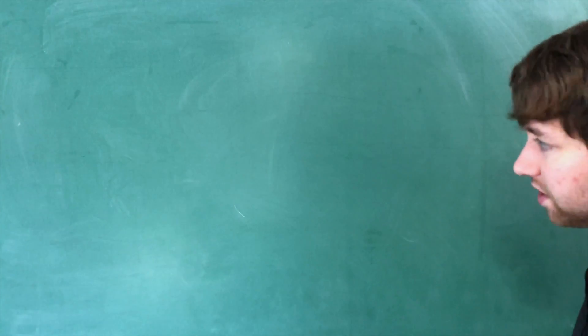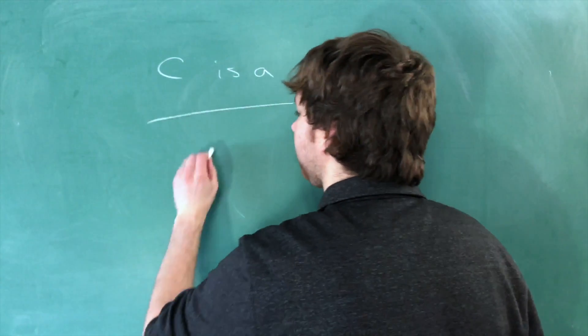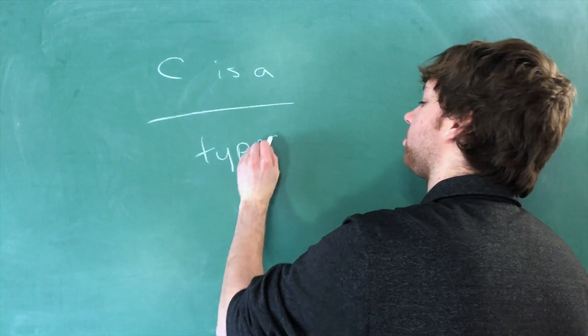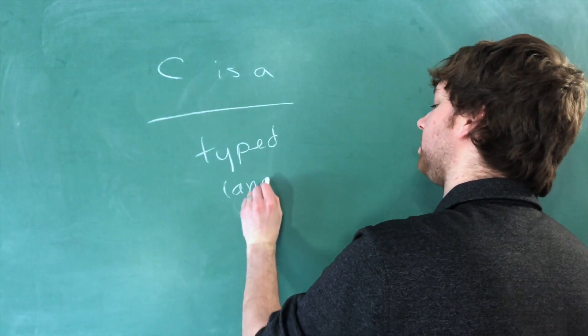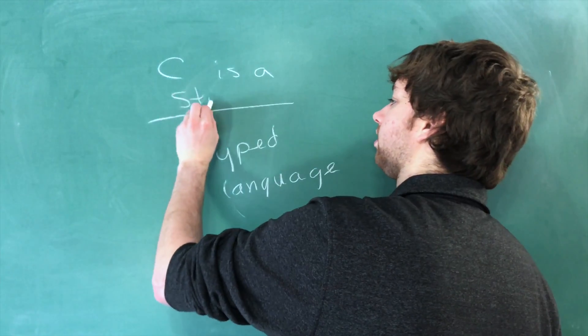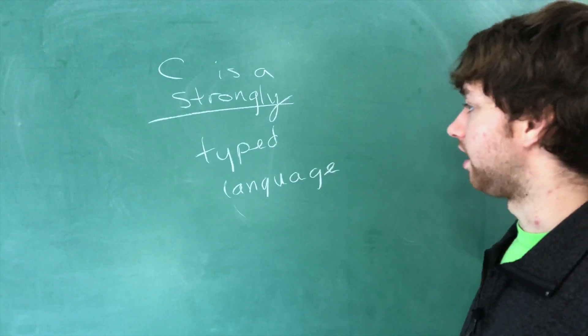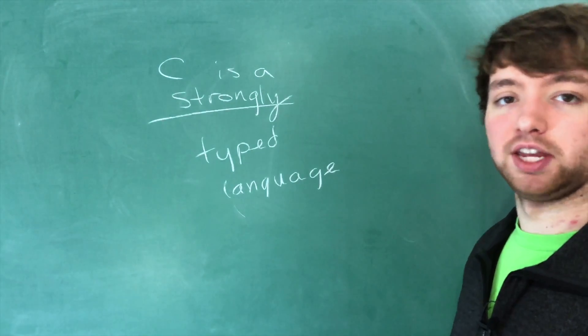Okay, so this one's going to be a fill in the blank. C is a blank typed language. So this is dealing with the data types. The answer here is strongly, and what that means is it's really strict when it comes to data types and every single value has to have a data type.